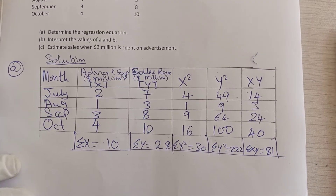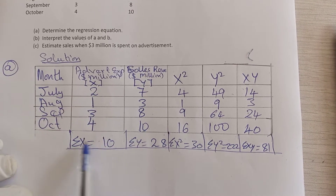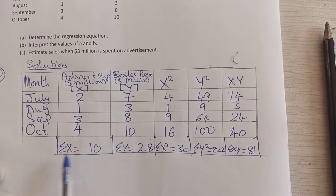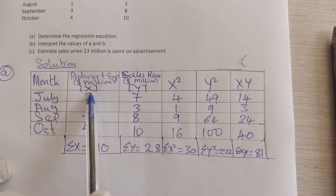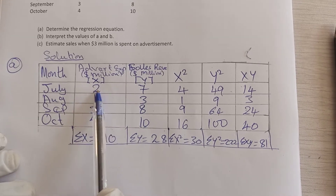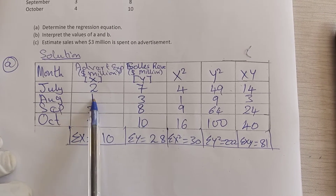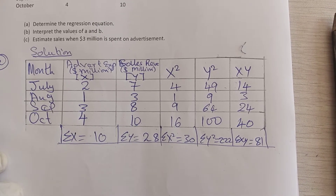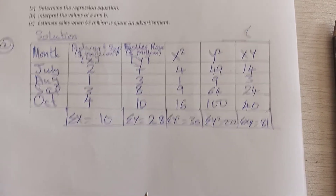You can also use Excel if you don't have a calculator. In a cell, input the equal sign, then type SUM, open bracket, select from cell B2 to B5, and it will add the values for you. You can copy the formula for the rest of the columns. So let's go to the main calculation.